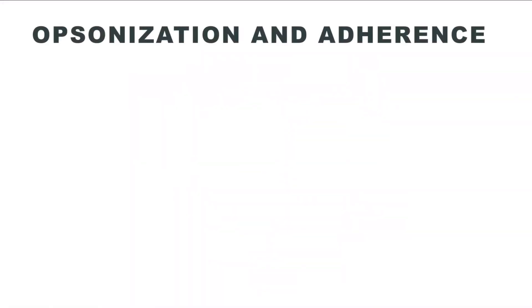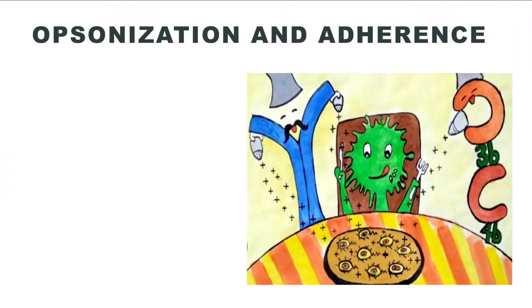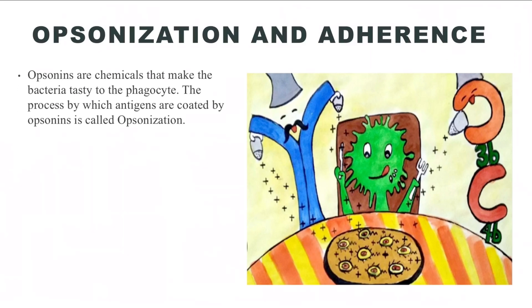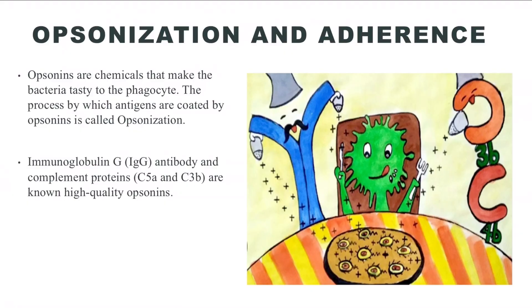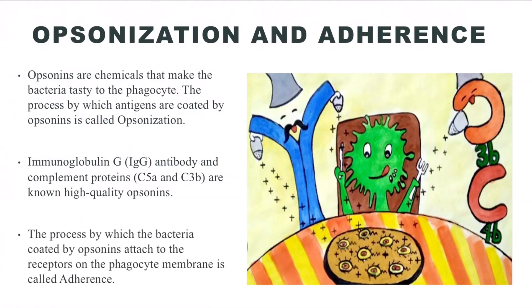Step three: Opsonization and adherence. The antigens are now coated with special chemicals that make them more recognizable to the phagocytic cells. These chemicals are called opsonins and the process is called opsonization. Complement proteins C5A and C3B and IgG antibodies are known to be high-quality opsonins. After opsonization, the membrane of the phagocyte attaches with the membrane of the microbial body by a process called adherence.